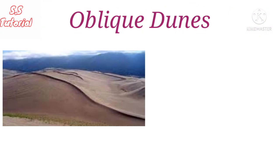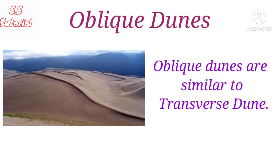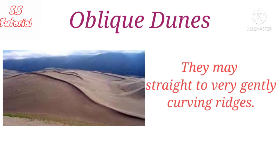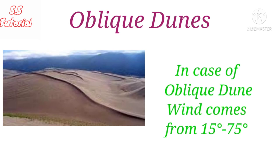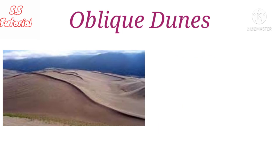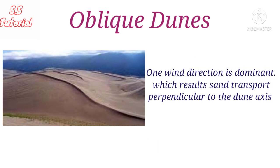Oblique dunes are similar to transverse dunes and may also be straight to very gently curving ridges. The difference is that the wind forming oblique dunes comes from two directions, generally 15 to 75 degrees to the dune axis, and one of the wind directions is dominant, resulting in a sand transport vector perpendicular to the axis of the dune.